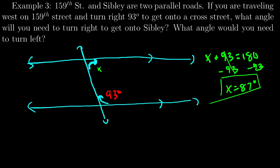Now, I also want to know what happens if I need to turn left. So, I'll put a y over here. Easiest way would probably be to realize that y and 93 degrees, they look the same. They are alternate interior angles. And whenever I have that, they'll equal each other.